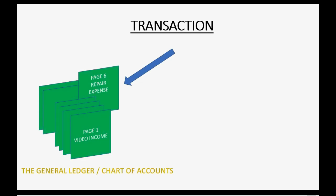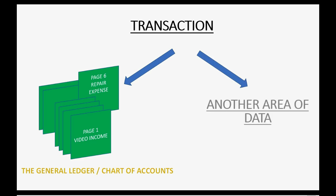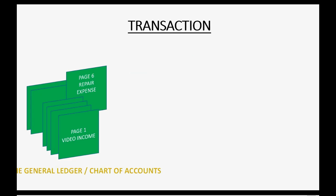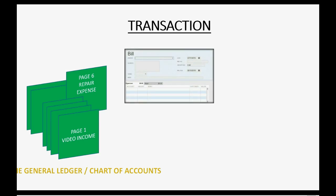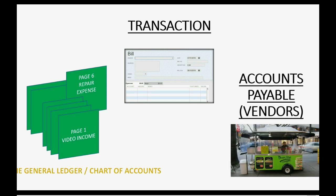Usually transactions change your chart of accounts as soon as you record the document. But transactions also change at the same time another area of data in your QuickBooks Online. For example, if you make a customer invoice, then accounts receivable would change along with the chart of accounts. If you entered a vendor's bill, the chart of accounts would change, but additionally, the records of vendors and accounts payable would change at the same time for that very same bill.